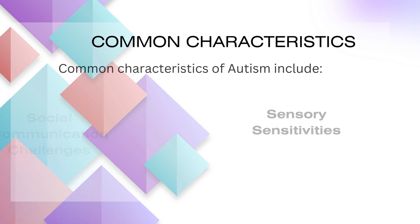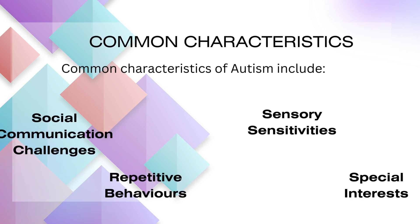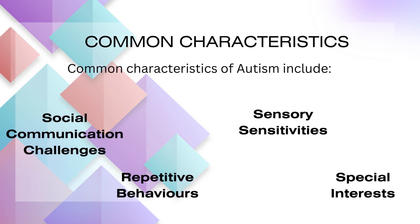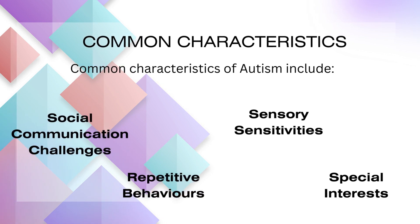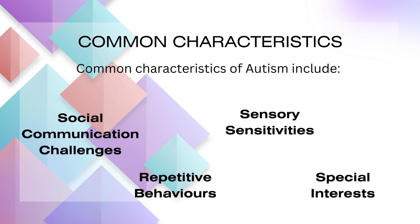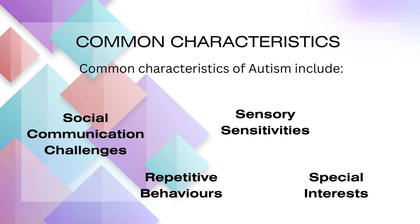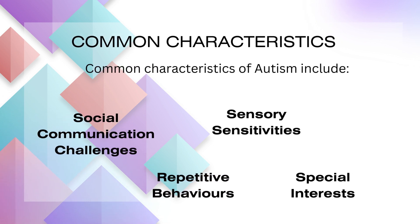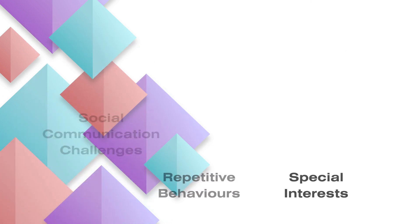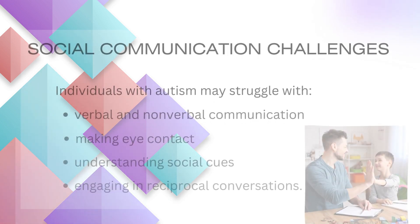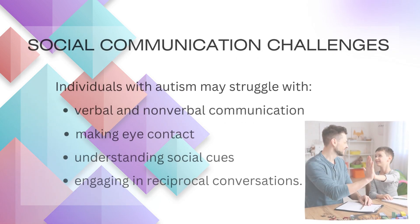Common characteristics of autism include social communication challenges, repetitive behaviors, sensory sensitivities, and special interests. Let's look at these individually.